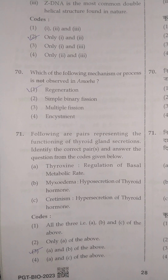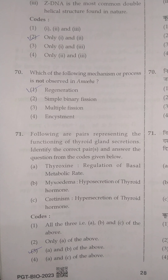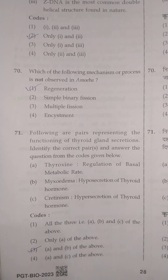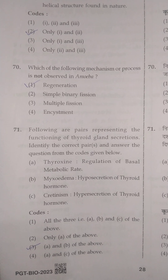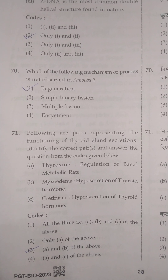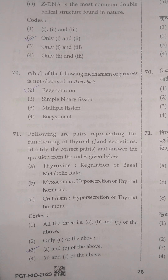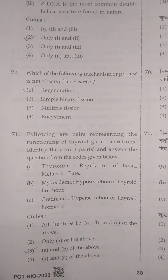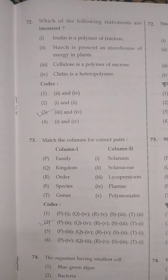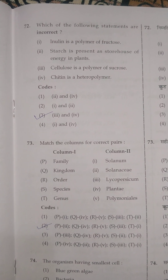The next question: following are the pairs representing the functioning of thyroid gland secretions — identify the correct pair. Its correct answer is option 3 — only options A and B are correct, because cretinism is also caused due to hyper-secretion of thyroid hormone.